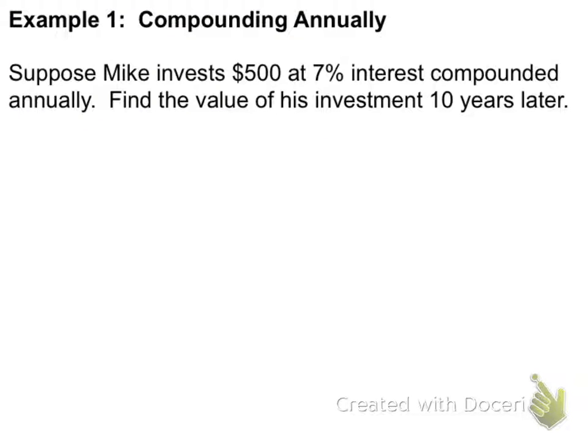Suppose that Mike invests $500 at 7% interest compounded annually. Find the value of his investment 10 years later. Well, A would be how much money he's going to have. P is $500. That's how much he invested.